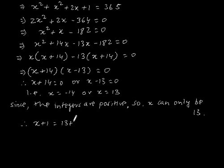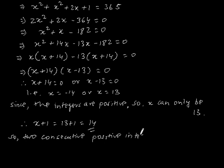= 13 + 1 = 14. So, the two consecutive positive integers are 13 and 14. Thank you.